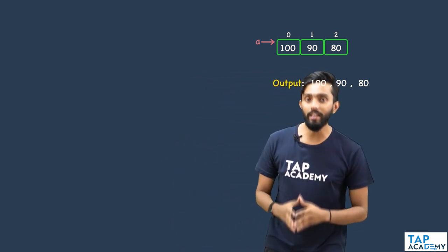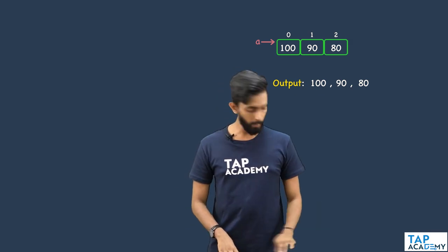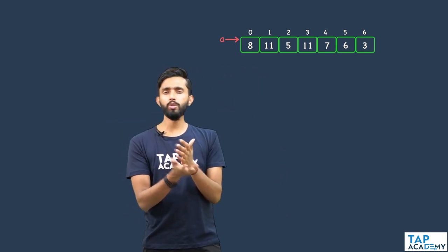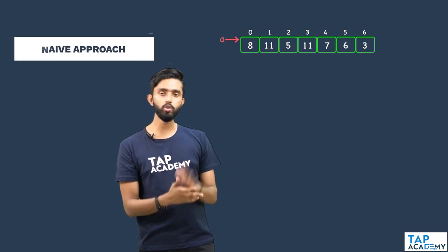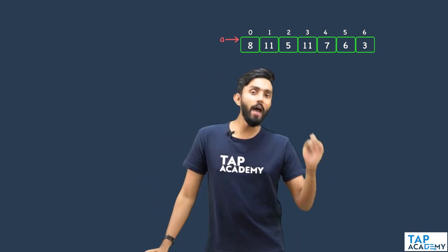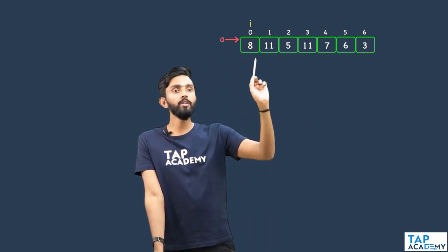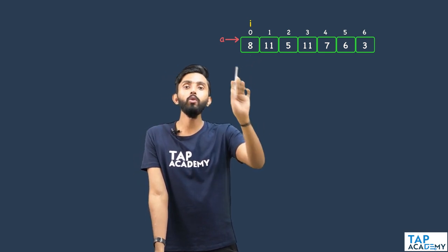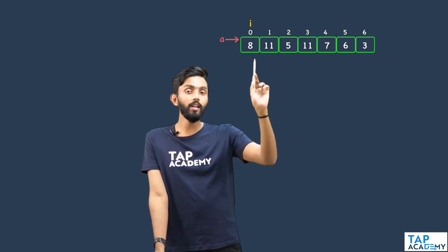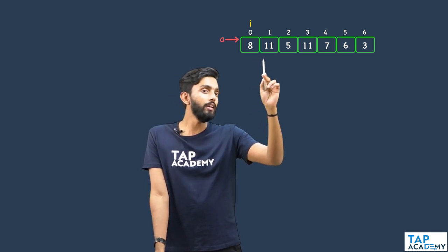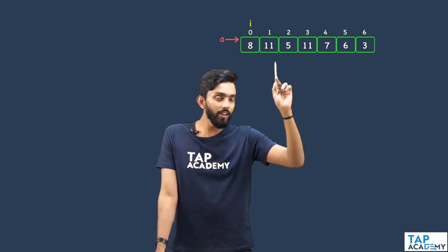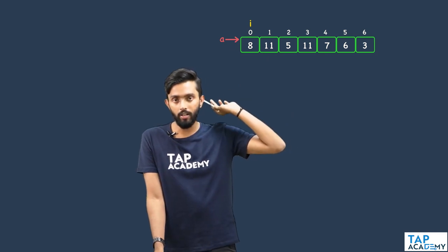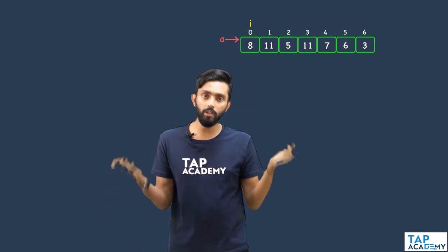I hope how to identify a leader has become crystal clear. Now let's talk about a solution — first a naive approach. I will create a variable i which begins from the start of the array. i's duty is to check whether the element it is pointing to is a leader or not, by checking all elements to its right and verifying they are all lesser than it.